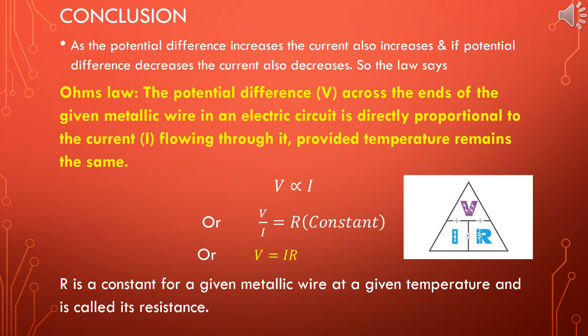Now let us understand the conclusion from the activity and graph. As the potential difference increases, the current also increases; if the potential difference decreases, the current also decreases. According to Ohm's law, the potential difference V across the ends of a given metallic wire in an electric circuit is directly proportional to the current I flowing through it, provided temperature remains the same. We can write V is directly proportional to I, and when we remove the proportionality sign the formula becomes V by I is equal to R, or V is equal to IR.